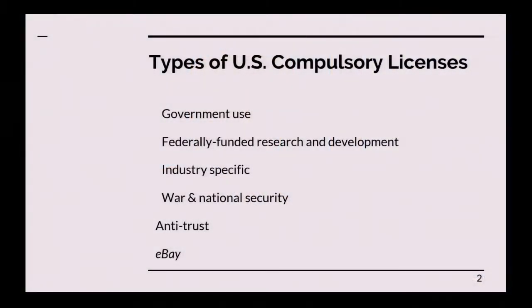There are a few different types of compulsory licenses in the United States. There are compulsory licenses for government use and for federally funded research and development. There are compulsory licenses in specific industries such as clean air and atomic energy. There are compulsory licenses that have been implemented or proposed in war and national security contexts, for antitrust, and under the eBay case. Some of these will be discussed later, so I won't get too in-depth into some of these.